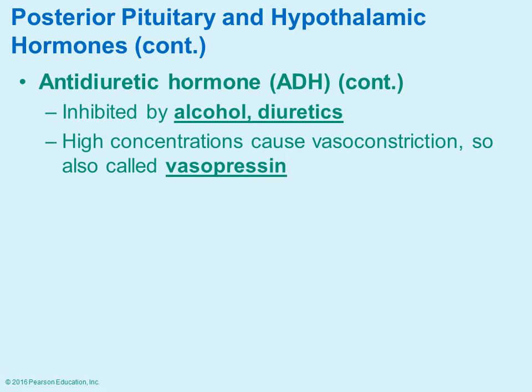ADH is also inhibited by diuretics — substances or medications that essentially make you urinate more, causing release of water. High concentrations of ADH can cause vasoconstriction, which is why it is also sometimes referred to as vasopressin.